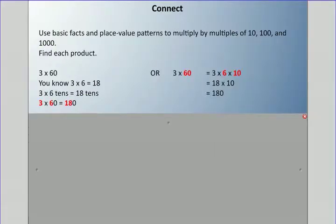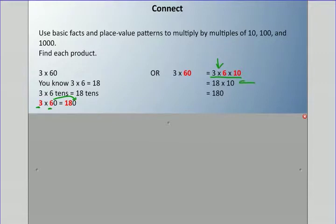Sometimes it's not quite as simple as that. We can use basic facts and place value patterns to multiply by multiples of 10, 100, and 1,000. For 3 times 60: we know 3 times 6 is 18, and 3 times 6 tens is 18 tens. We multiply the 3 and the 6 and keep the zero — that's 180. Another way: break it up as 3 times 6 times 10, which is 18 times 10, equals 180.